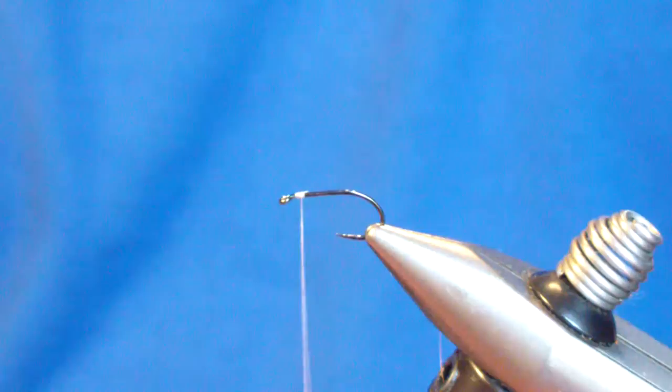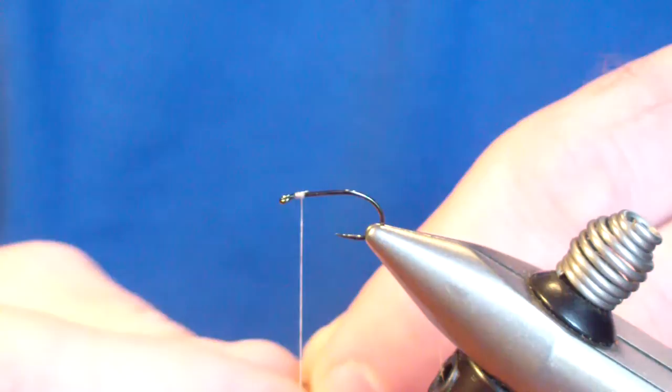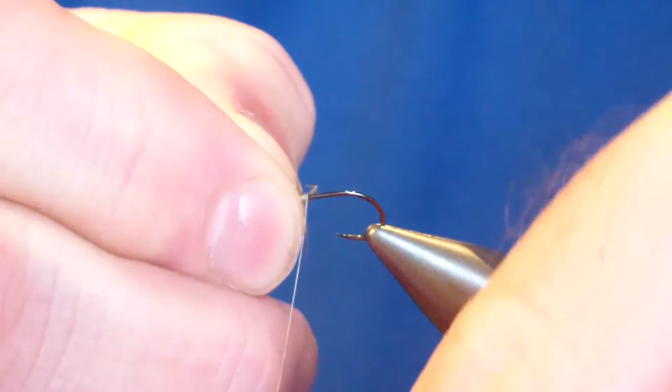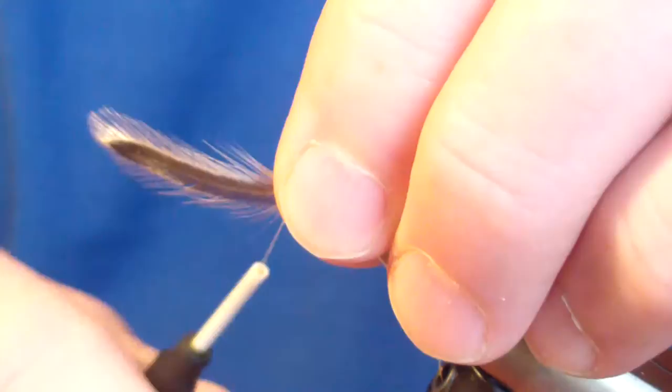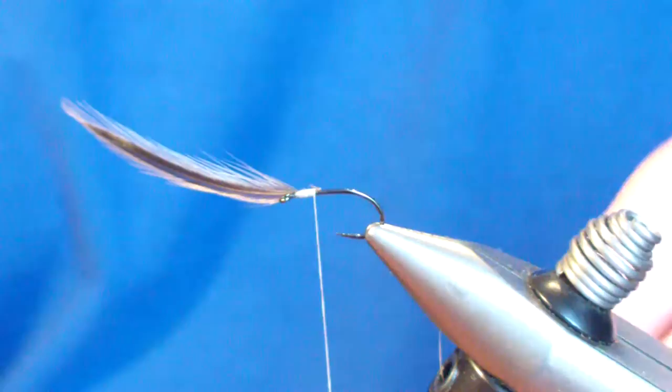And the first thing we're going to do is tie in our hackle. I used tan badger, and I prepped the end in this fashion. I clipped the end leaving some stubs, and we're going to tie that in facing over the eye and give a couple wraps to hold it.